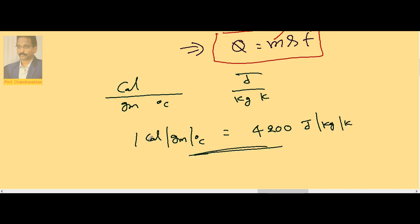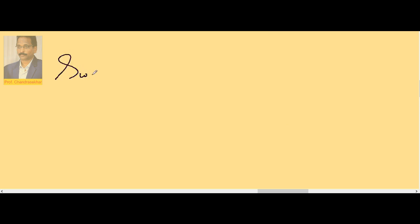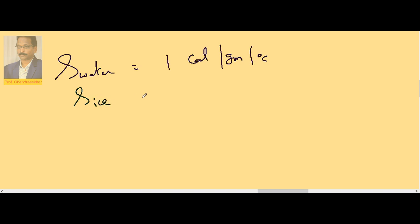This conversion holds because 1 calorie equals 4.2 Joule, but 1 gram equals 10 to the power of minus 3 kg, which goes to the numerator, giving 4200. So that is the relation between CGS and SI units. The specific heat of water in CGS is easy to remember: 1 calorie per gram per degree centigrade. The specific heat of ice is 1/2 or 0.5 calorie per gram per degree centigrade.